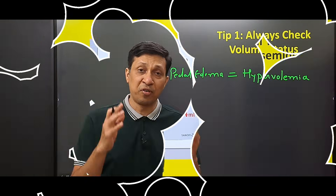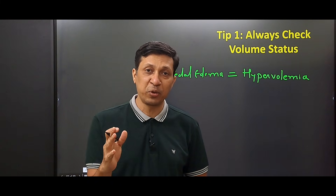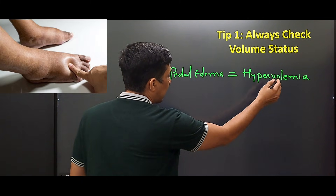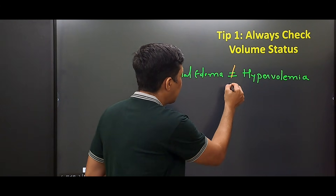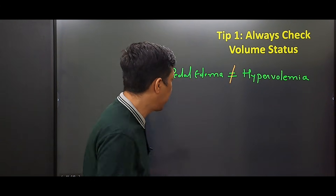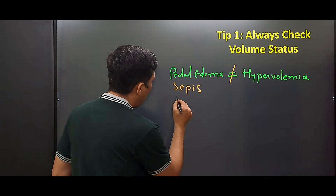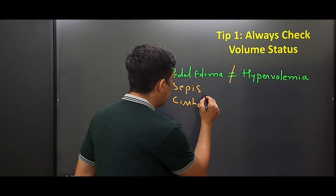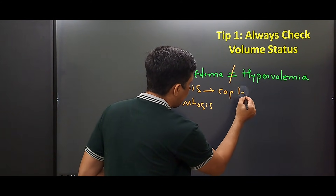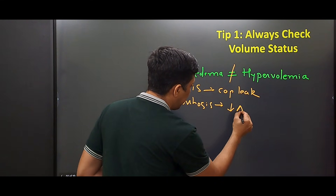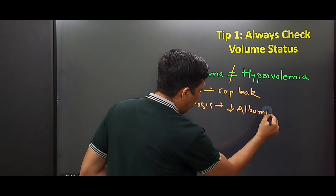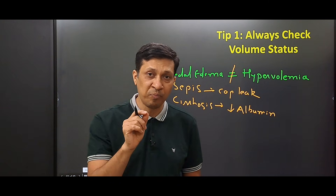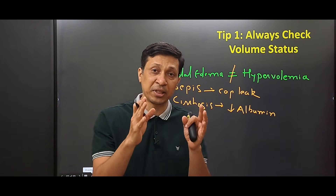The first tip is that whenever you are starting furosemide for any patient, always check the volume status. We always believe that pedal edema equals hypervolemia, but this is not always correct. In certain states like sepsis or cirrhosis, the matter is different. In sepsis there is capillary leak, and in cirrhosis there is decreased albumin — and these are the causes of edema.